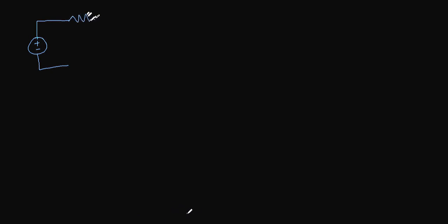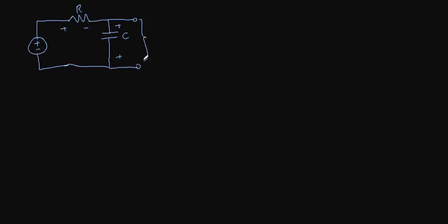Let's see what happens if we have a voltage source, a resistor R, and a capacitor C in series. We are interested in the voltage across the capacitor, which is the output voltage V. There is also a current I flowing in the circuit, and the input voltage we will call VI.